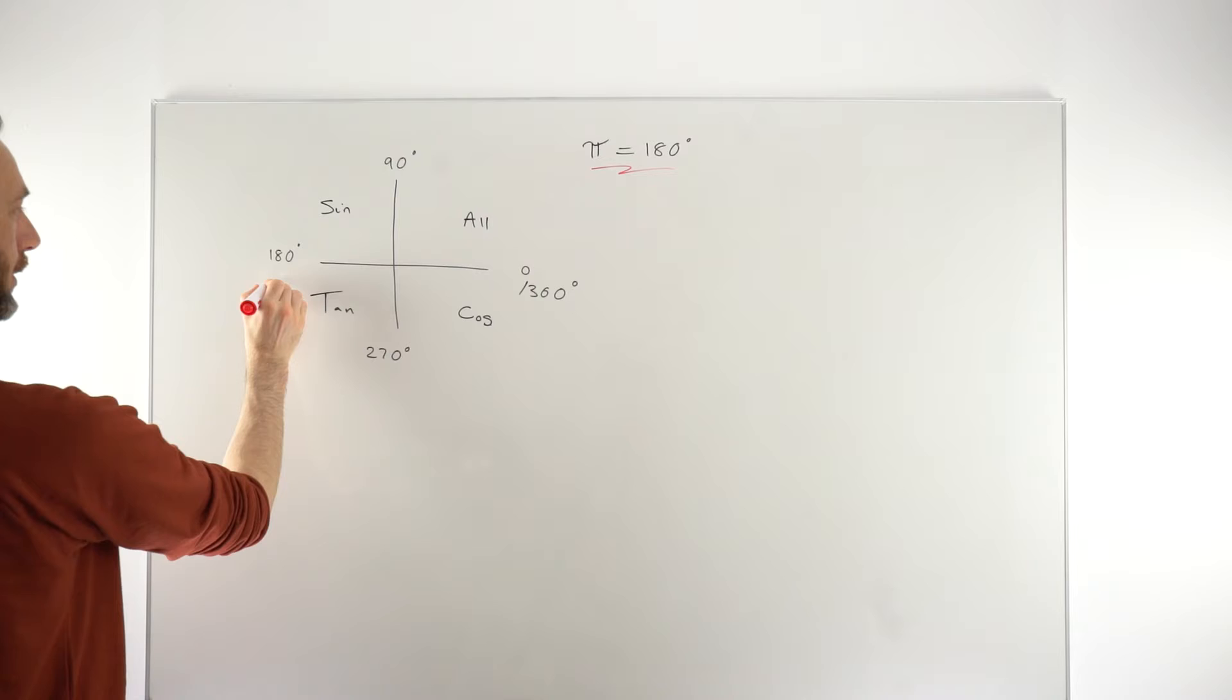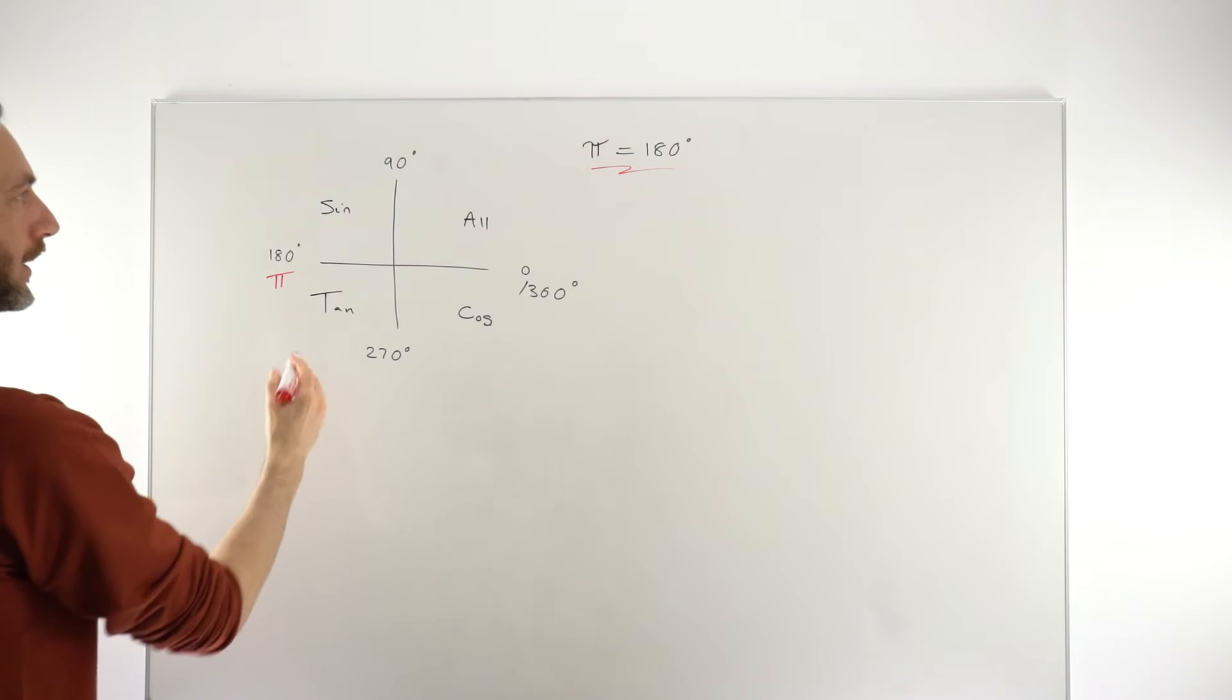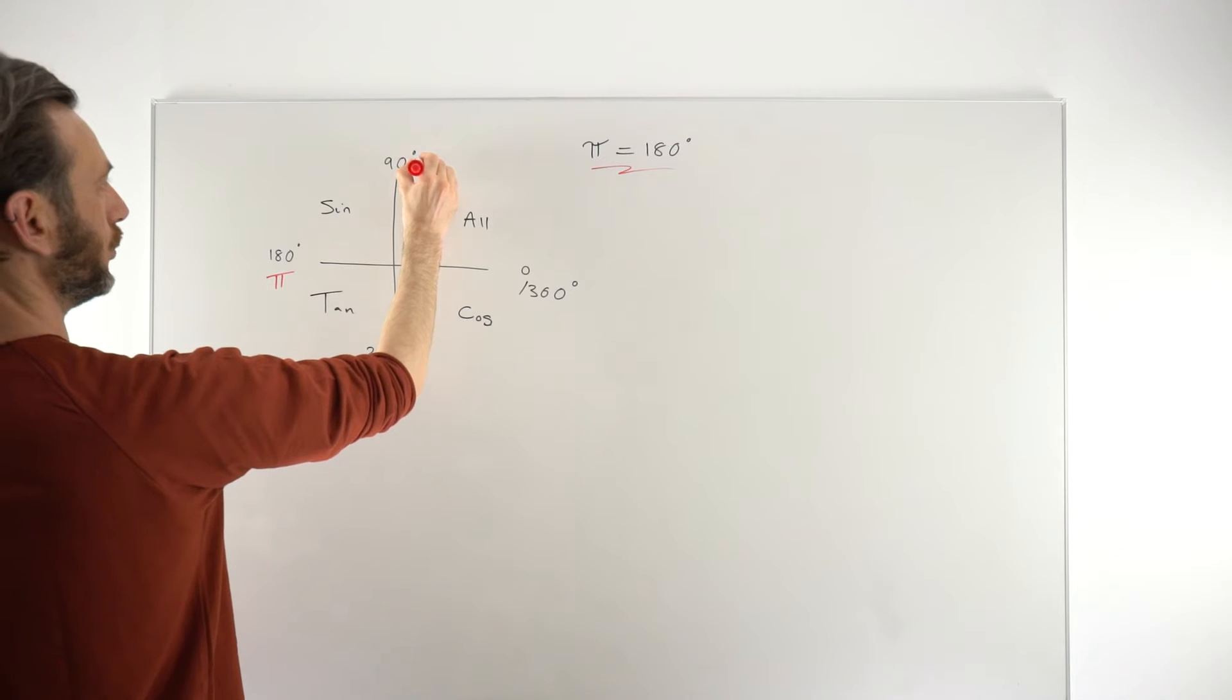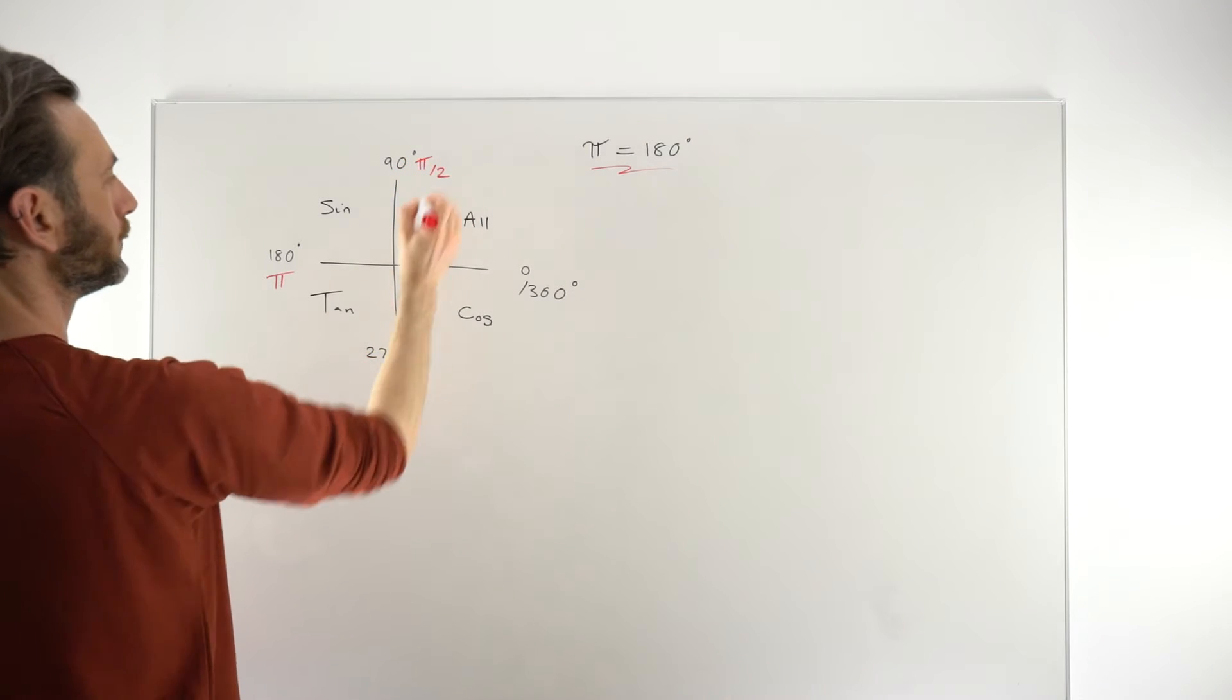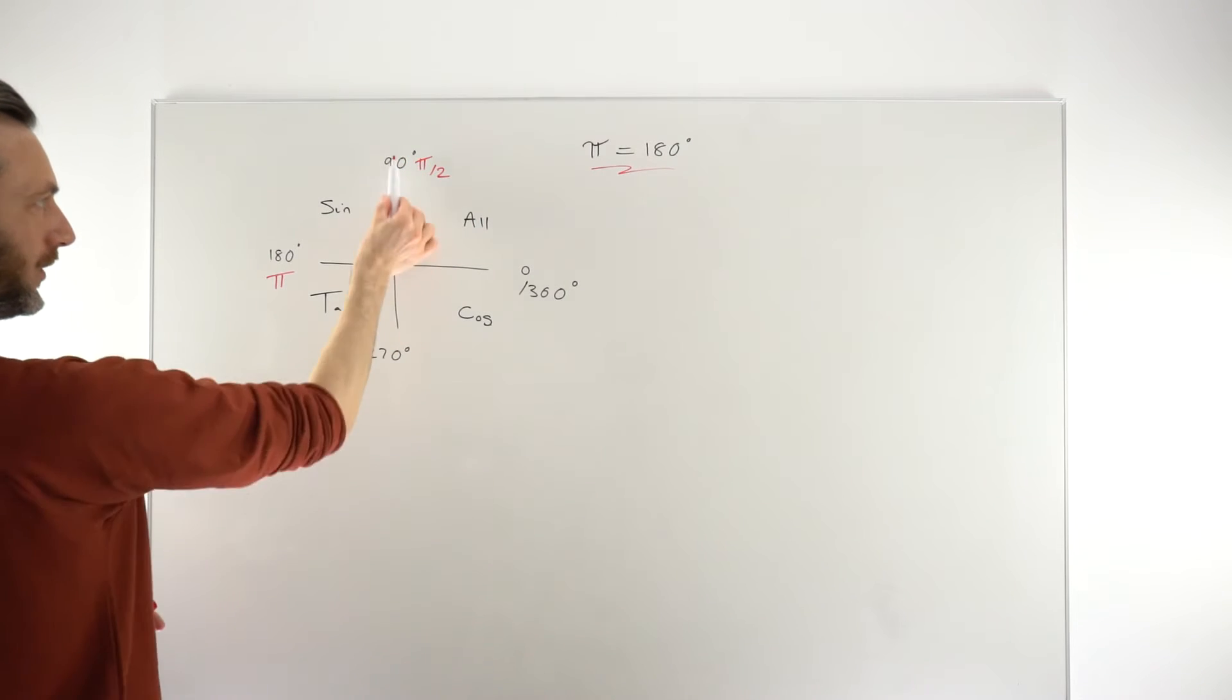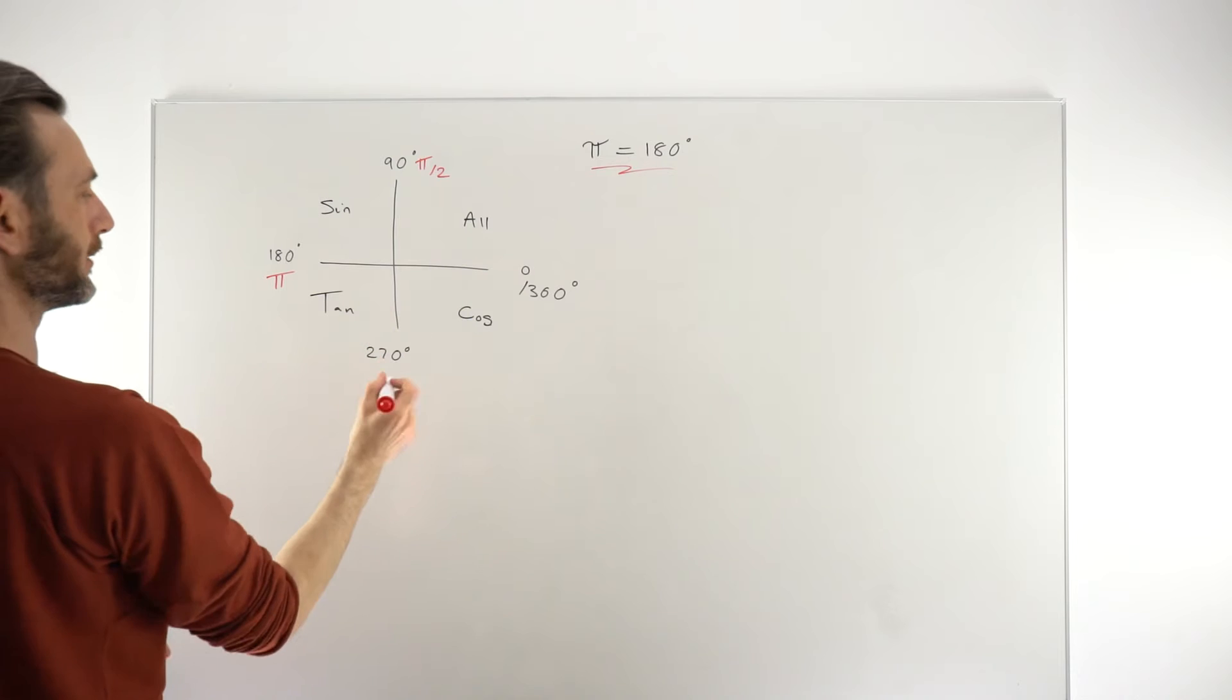So this would be 180 degrees, but π radians. 90, obviously, is half of 180, so that must be half of π. So we just call this π/2. And then 270 is 3 times 90, so it must be 3 times π/2. So that gives us 3π/2 radians.